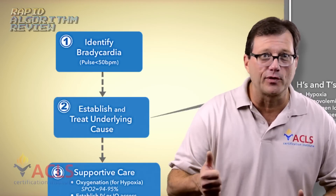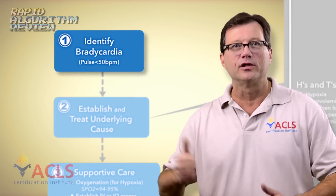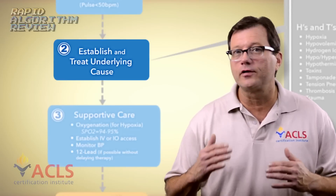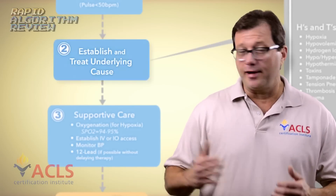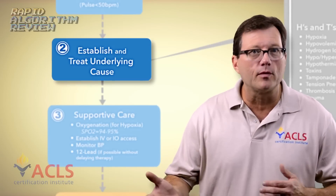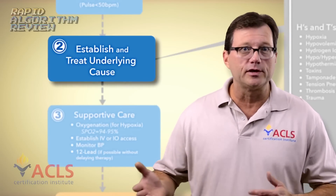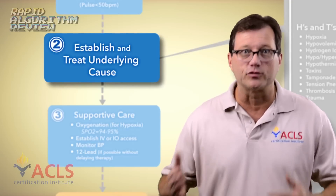Step one: assess for bradycardia, which is generally a pulse below 50. Next, try to figure out what's causing this bradycardia and ask the patient, what's your normal heart rate? If they're an athlete, it may normally be low. We're treating the patient, not the rhythm.